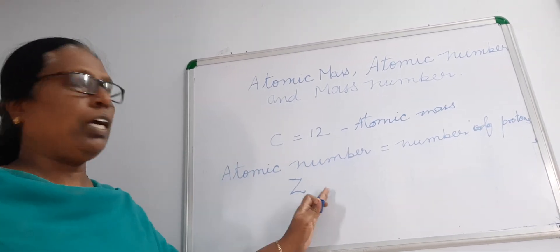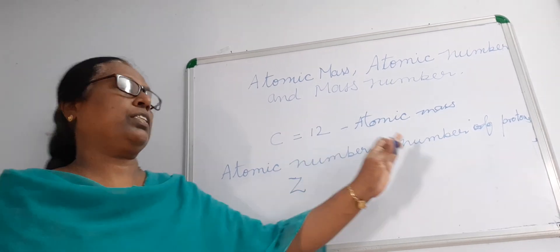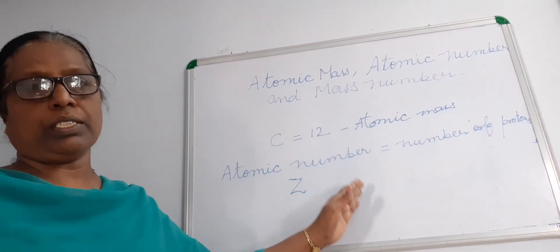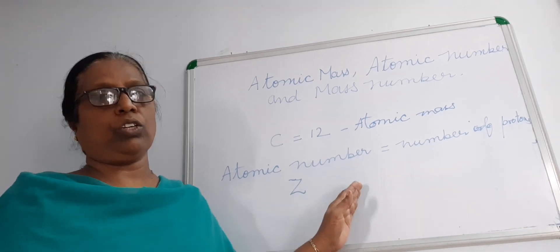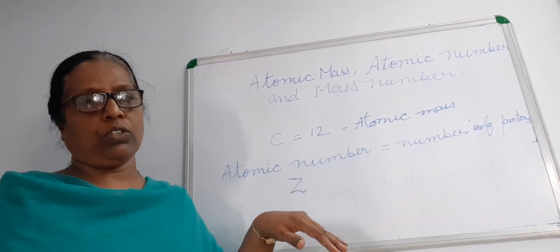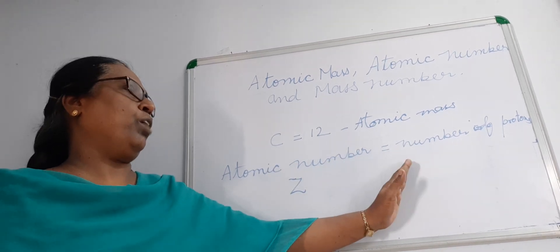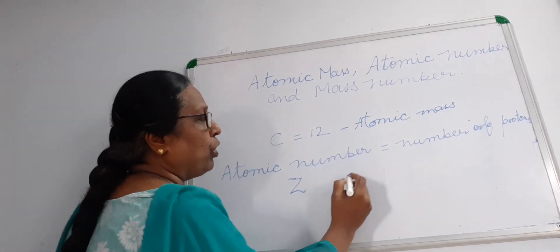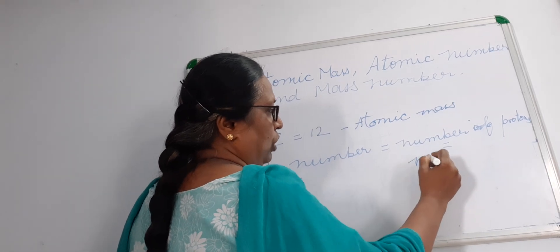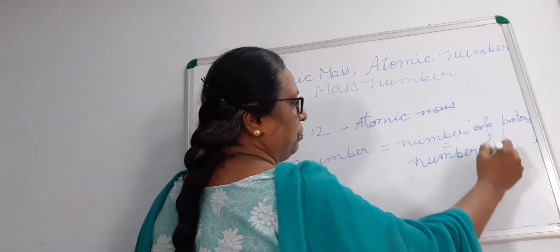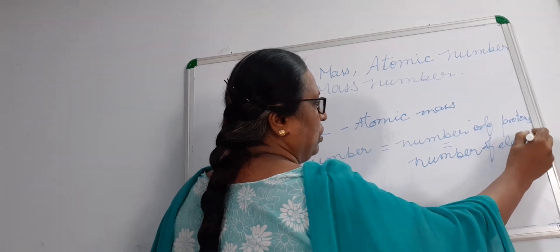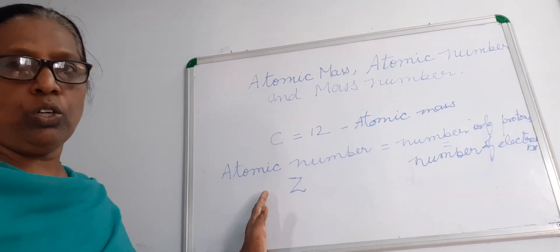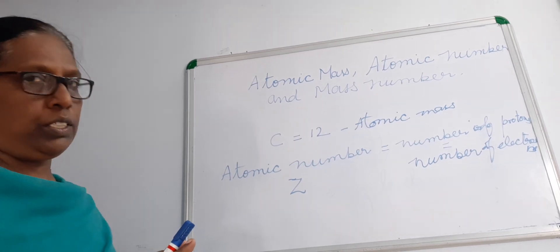When you say any atomic number, not only does it tell the number of protons — we know that the atom is neutral. As many protons are present in the nucleus, the same number of electrons are outside the nucleus, revolving in orbits. So the number of electrons is equal to the number of protons. Atomic number is the number of protons of an atom.